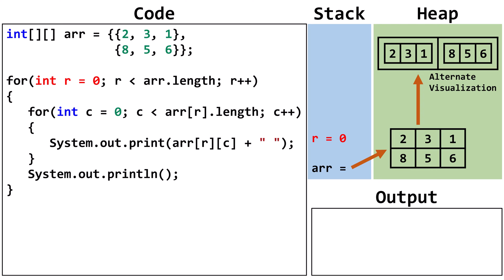Now we'll trace the code. We set R to 0. We'll continue the outer loop as long as R is less than arr.length. When we take the length of a 2D array, we are counting the number of elements in the outer array. Using the traditional visualization, we are counting the number of rows. For our current array, we can think of this expression as R is less than 2. R is 0, so this evaluates to true.